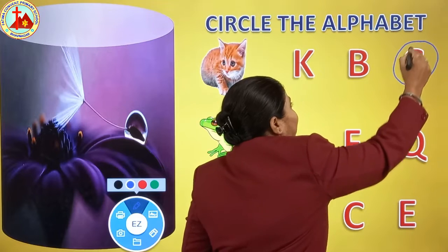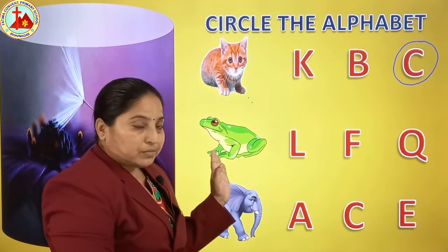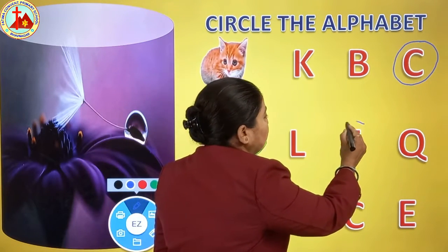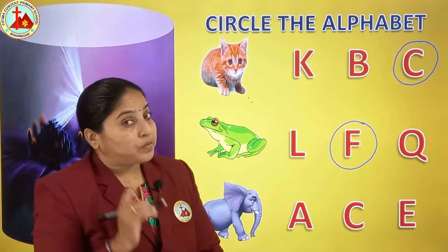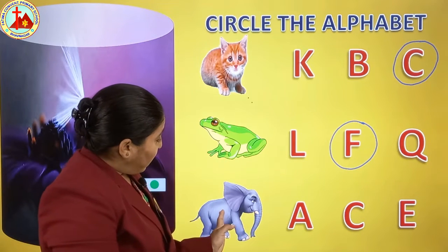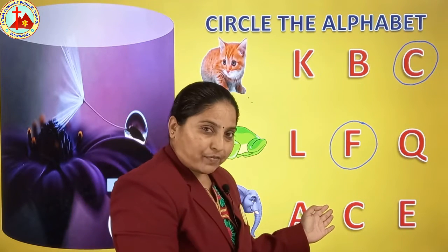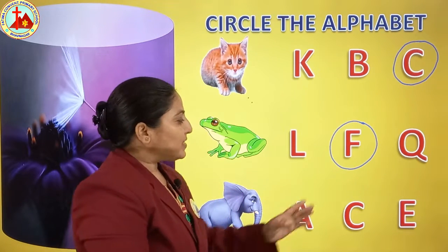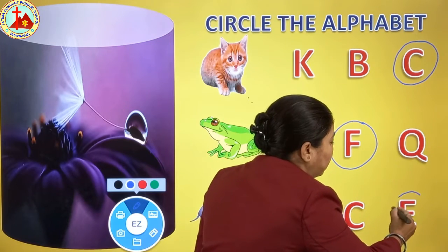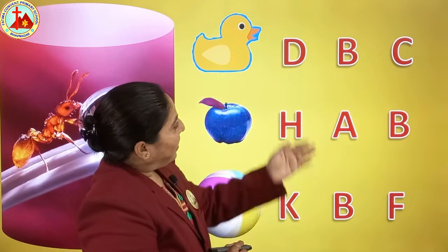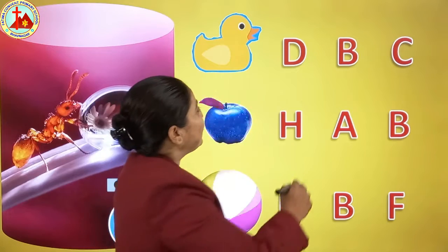Now tell me, which animal is this? This is frog. F for frog — yes! So we will put a circle on letter F. For this you have to remember all the pictures and letters. Now which animal is this? Elephant. A for elephant? No. C for elephant? No. E for elephant? Yes! So we will draw a circle around letter E. Now which one is this? This is duck. D for duck? Yes, D for duck — so the answer is D.